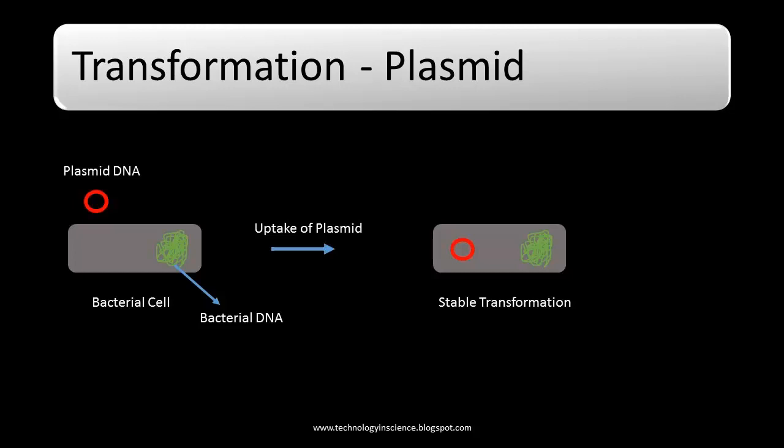Relatively high concentrations of DNA, higher than would normally be present in nature, are used to increase transformation frequency. When linear DNA fragments are used, E. coli is usually rendered deficient in one or more exonuclease activities to protect the transforming fragments. It is even easier to transform bacteria with plasmid DNA, since plasmids are not as easily degraded as linear fragments and can replicate within the host.